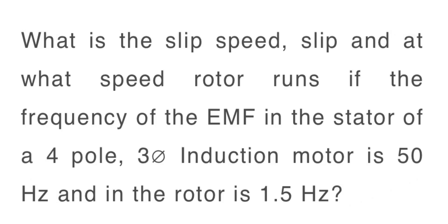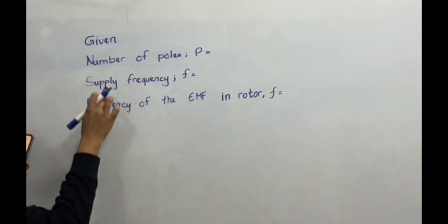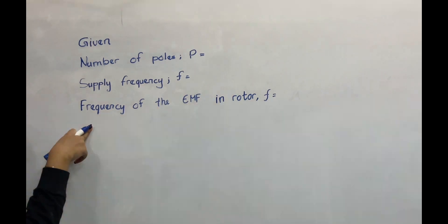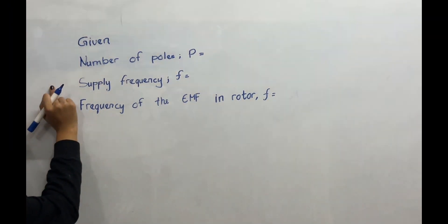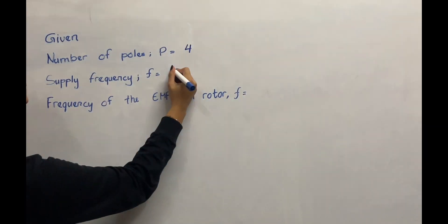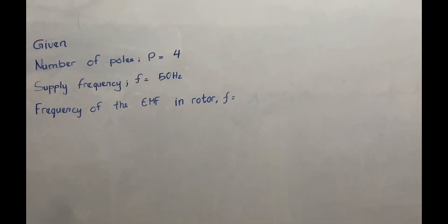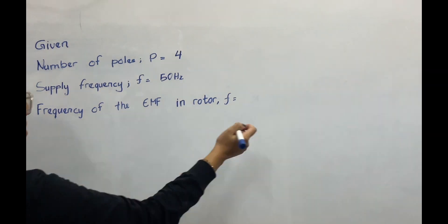What is the slip speed, the slip, and the rotor speed, if the frequency of the EMF in the stator of a four-pole, three-phase induction motor is 50 Hz and in the rotor is 1.5 Hz? So the given parameters are: number of poles P = 4, supply frequency = 50 Hz, and the frequency of the EMF in the rotor = 1.5 Hz.